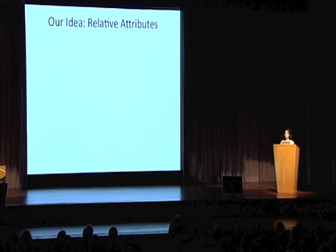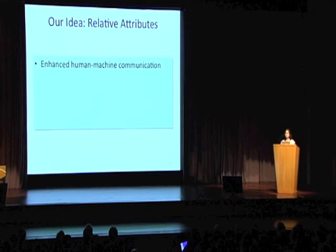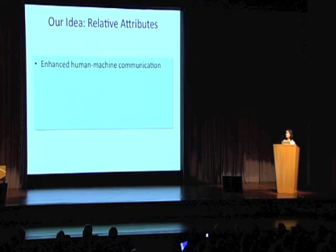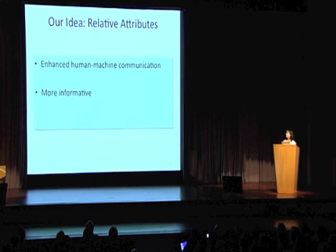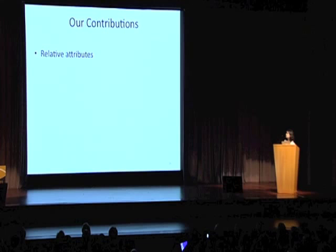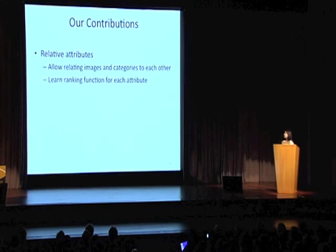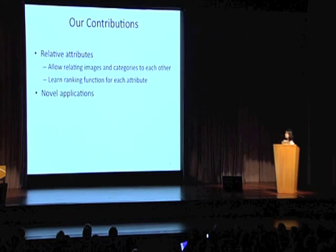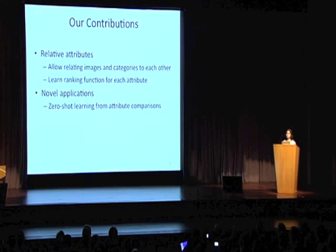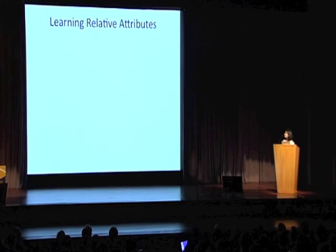The great thing about relative attributes is that they enhance the mode of communication between humans and machines. With relative attributes, you can relate objects to other objects via attributes, and that's a much richer semantic loss of relationships we can talk about. They're more informative while still being natural for humans. In this paper, we propose the notion of relative attributes, which can be used for relating images and categories to each other, modeled via ranking functions, and applied to two novel applications: zero-shot learning from attribute comparisons, and automatically generating image descriptions.